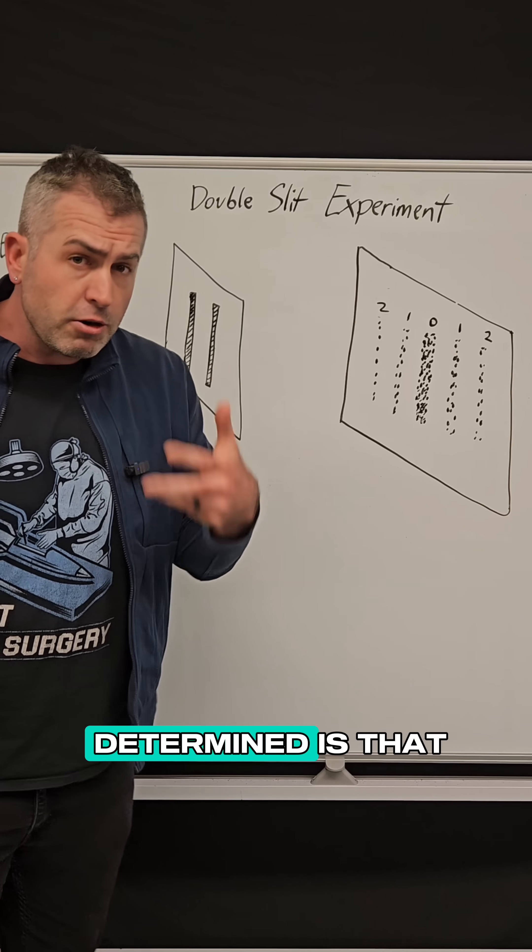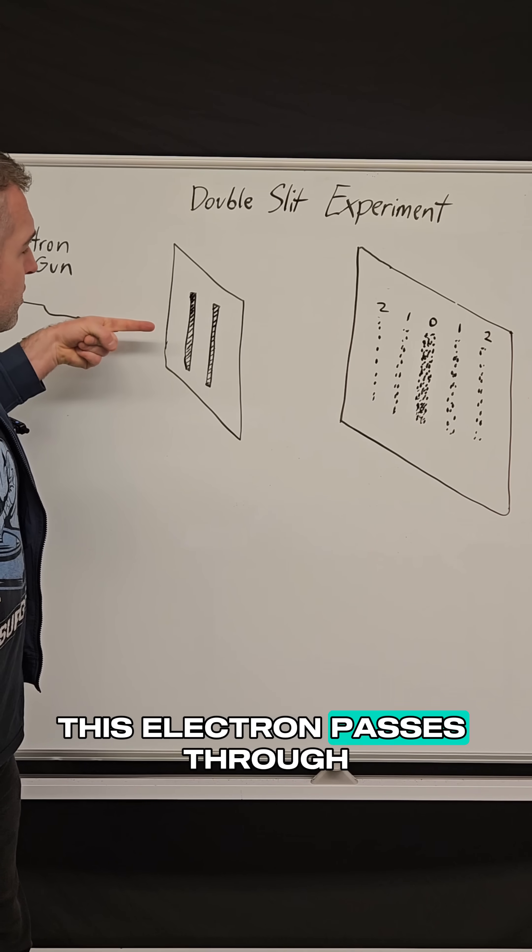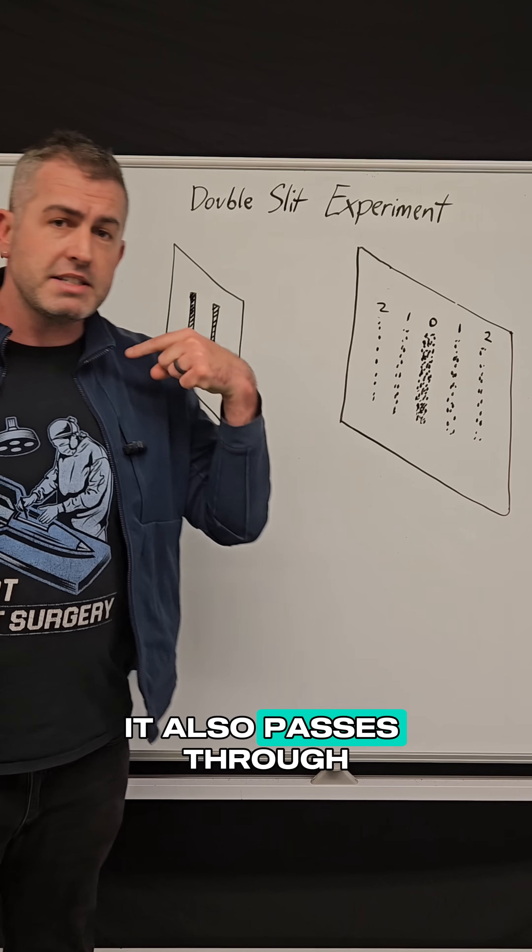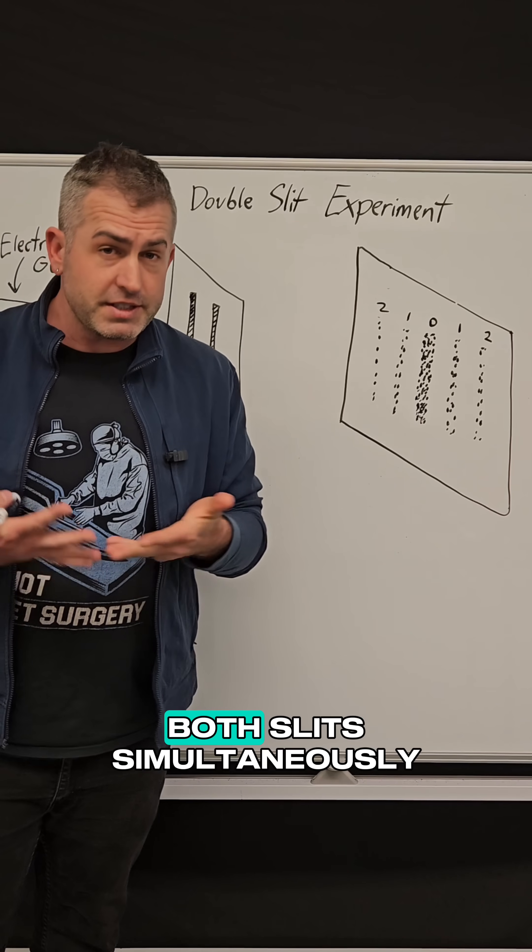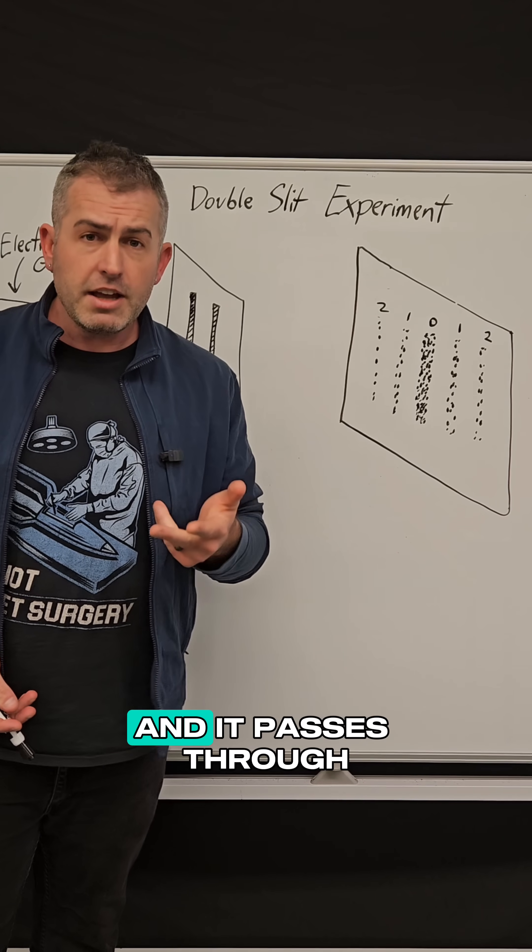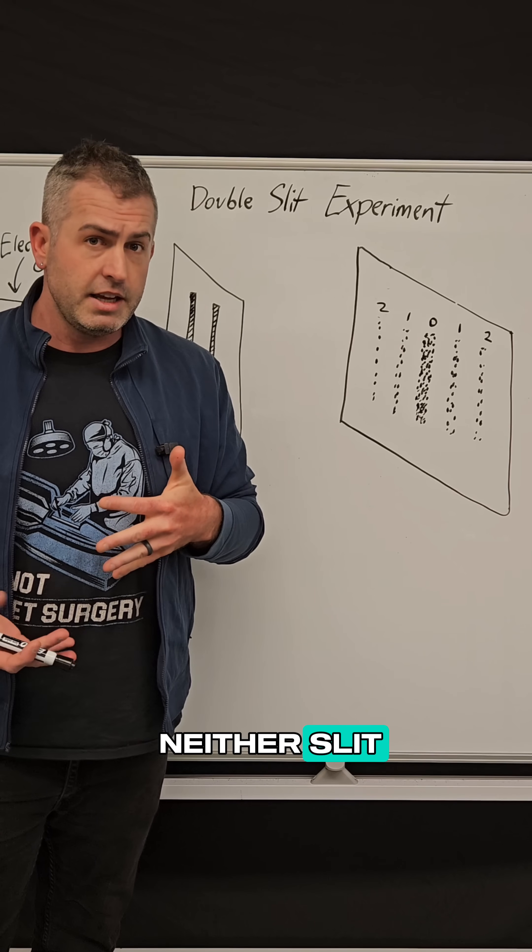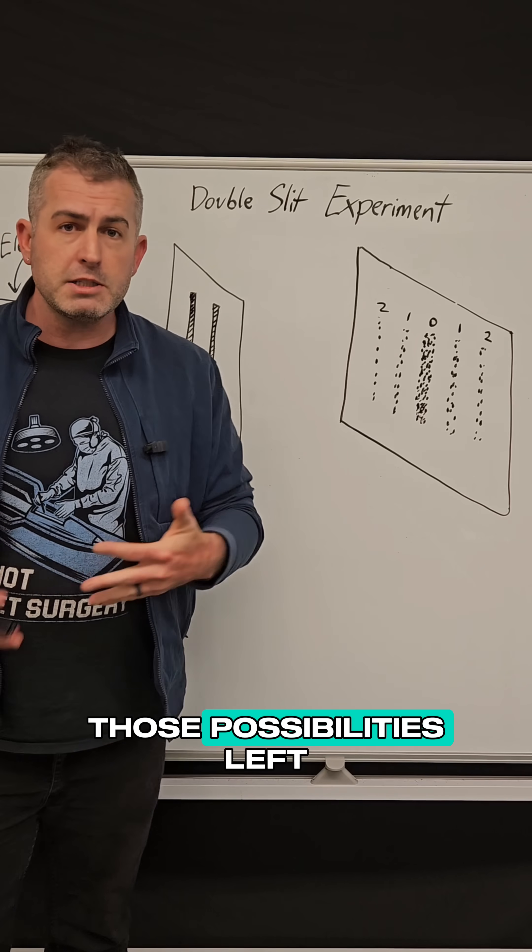And so what we've determined is that this electron passes through the left slit, it also passes through the right slit, at the same time it also passes through both slits simultaneously, and it passes through neither slit. So all four of those possibilities...